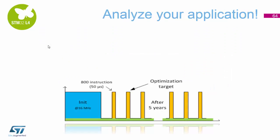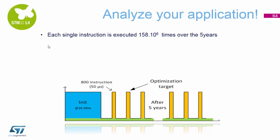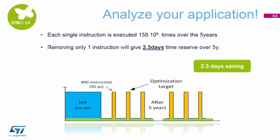You need to analyze your application. There's always an initialization period at the start, then chances are you'll be running for a while and sleeping for a while — and that pattern continues for up to five years as shown on screen. Every single instruction executed over those five years adds up significantly. If you can remove even one instruction, you can save one, two, or three days of power over that five-year window. It starts adding up nicely every time you remove individual instructions.